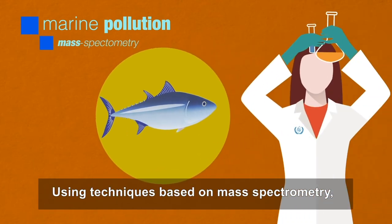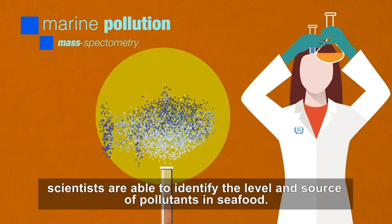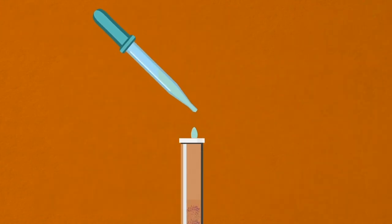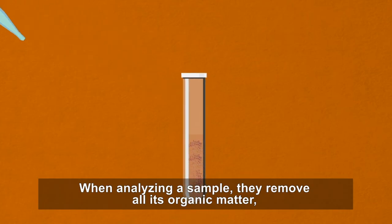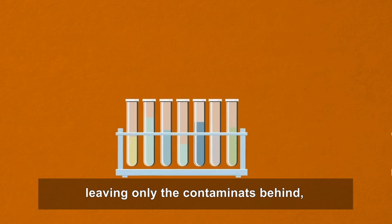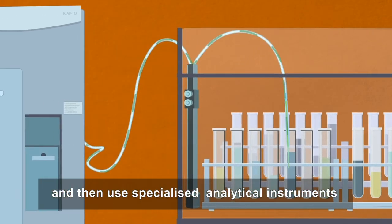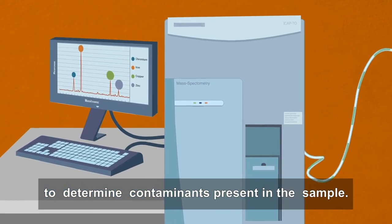Using techniques based on mass spectrometry, scientists are able to identify the level and source of pollutants in seafood. When analyzing a sample, they remove all its organic matter, leaving only the contaminants behind, and then use specialized analytical instruments to determine contaminants present in the sample.